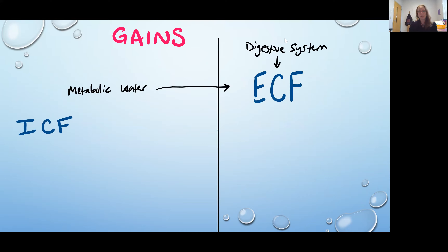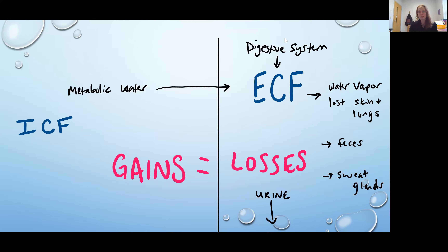The digestive system is an important source of fluid in the body, but also your cells are producing some water as a result of metabolism, and that water can also be used to increase the amount of extracellular fluid. Your losses then are primarily the urinary system, but also as we are exhaling, we have some water vapor being lost at the lungs. You also have both insensible and sensible perspiration — some evaporation across the skin all the time, plus sweat glands can cause some water secretion. And some water is lost with the feces. In order to maintain fluid balance, the gains have to be equal to the losses.